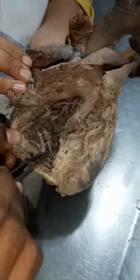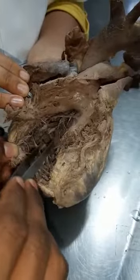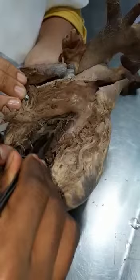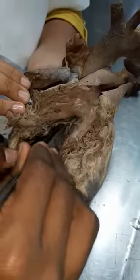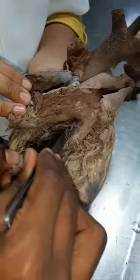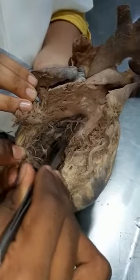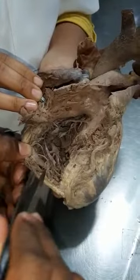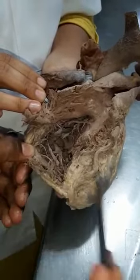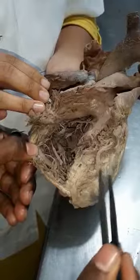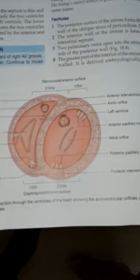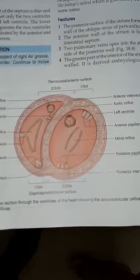It contains the right branch of the AV bundle. The cavity of the right ventricle is crescent-shaped in cross-section because of the forward bulging of the interventricular septum. The wall of the right ventricle is thinner than that of the left ventricle in the ratio of one to three.